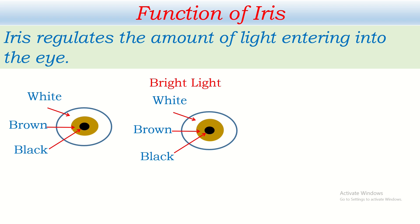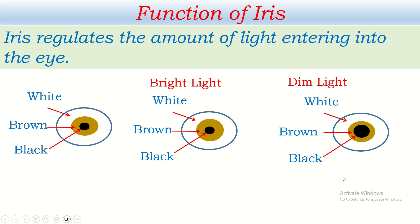The iris is not always brown; in some cases it may be blue or greenish, but normally it is brown in color. In bright light, the iris covers most of the part of the pupil and the pupil becomes very small. This small pupil allows very less amount of light to enter into the eye, but this light is very bright and its intensity is high, so it is enough to see the object clearly.